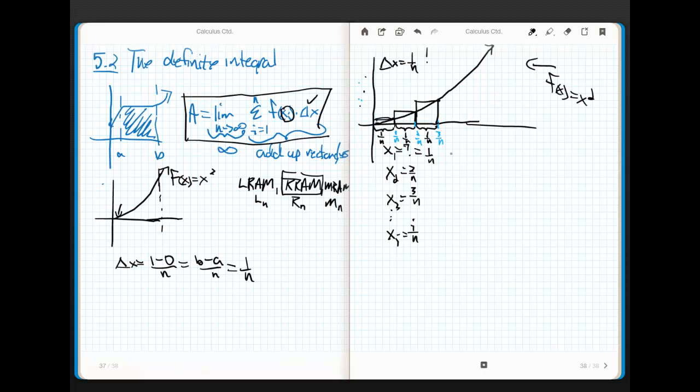Believe it or not, we have enough information to build the area. I know that the area is equal to the limit as n goes to infinity of the sum as i goes from 1 to n. Now if x sub i is i over n, what is f of x sub i? If f of x is x squared, then f of x sub i is just x sub i squared, which is equal to i squared over n squared. See what I did?